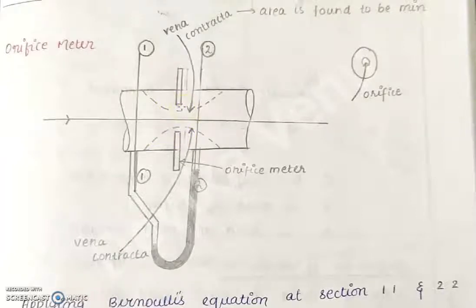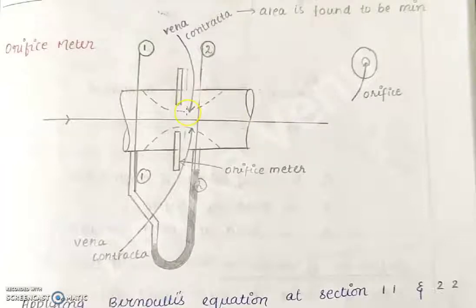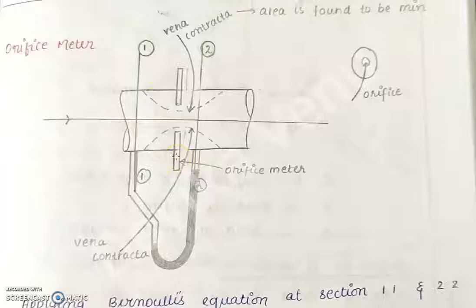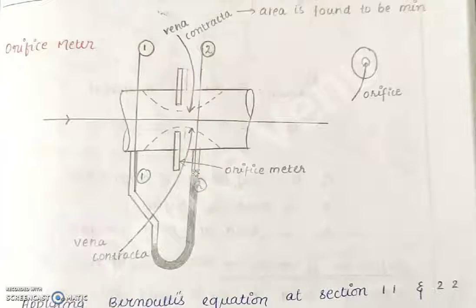Coming to the dimensions of the orifice: the orifice diameter is kept 0.5 times that of the pipe diameter, or it may vary from 0.4 to 0.8 times the pipe diameter. Section 1 is taken 1.5 to 2 times the pipe diameter from the orifice on the upstream side, and section 2 is kept at the vena contracta, which is almost 0.5 times the pipe diameter from the downstream side of the orifice.